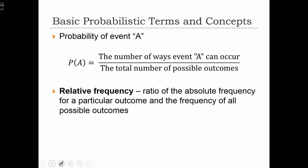So the probability of an event that we'll call A is simply the number of ways an event A can occur divided by the total number of possible outcomes. When we express probability in this way, we call it the relative frequency, or this is the relative frequency method for determining the probability of an event.